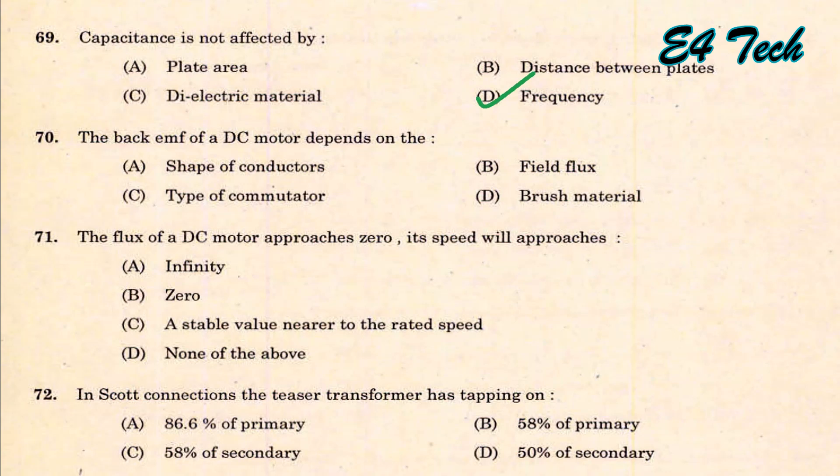The back EMF of a DC motor depends on — using EB = φZN/60 × (P/A) — it depends on flux. The back EMF depends on field flux. That is option B.